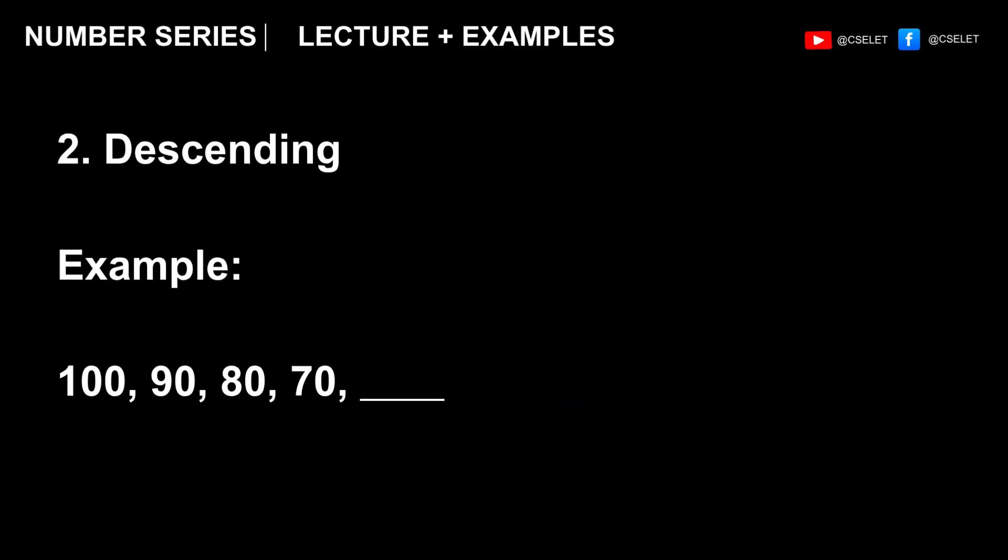The second pattern is descending. When you say descending, it means that the numbers are going down. Like for this example, we have 100, 90, 80, 70, and blank. So clearly, the number series is decreasing by 10. Therefore, the correct answer is 60.